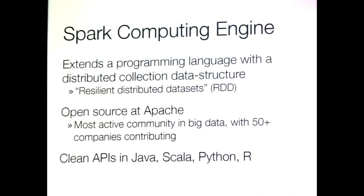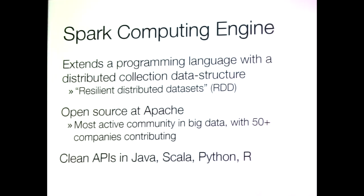Before diving into MLlib, let me give a quick overview of Spark. MapReduce solves many problems with distributed computing — it handles fault tolerance, and you don't have to write a different program for every machine. It also handles shipping computation to where your data is. Spark, in my opinion, is one of the more advanced data flow paradigms. People are calling it a successor to Hadoop, but I wouldn't even call it that anymore — it's its own thing.